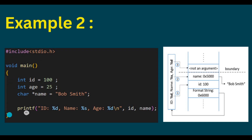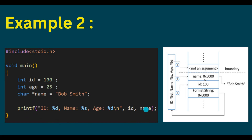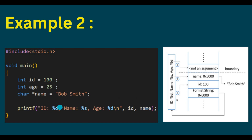This is the exact code we use for example one. The only difference is here we did not pass age as an optional argument. When main calls printf, the compiler pushes the parameters in reverse order: first name, then id, then the format string. Printf scans the format string; when it encounters %d, it calls va_arg. Va_list is initially pointing to id, so va_arg returns 100 and advances va_list. So this %d is replaced by 100.